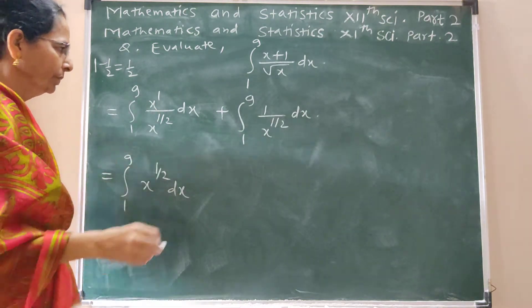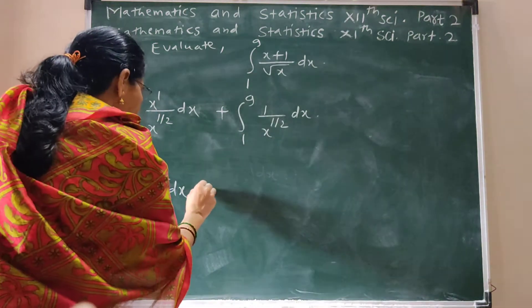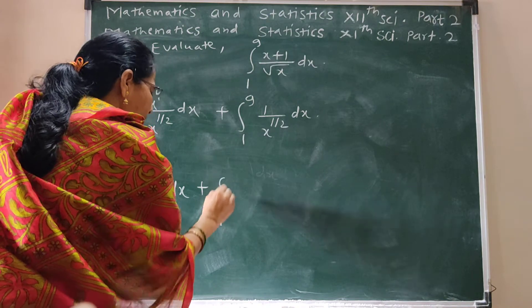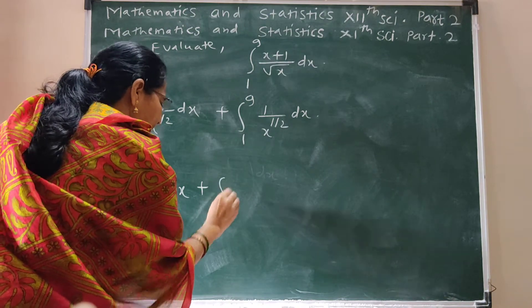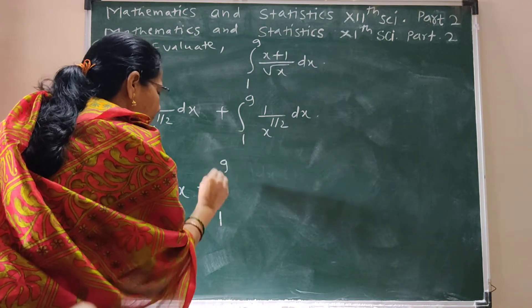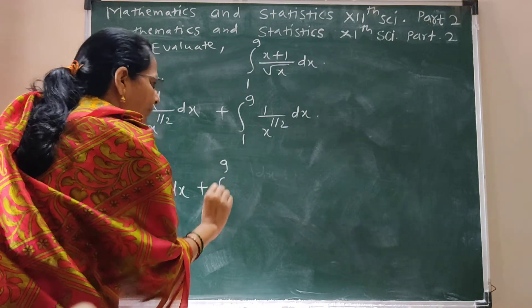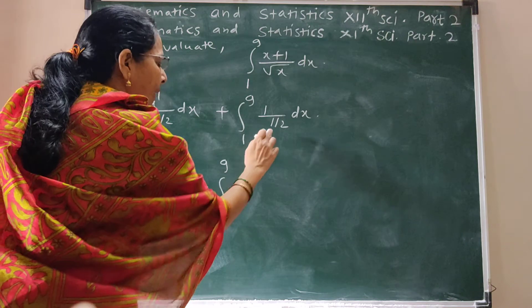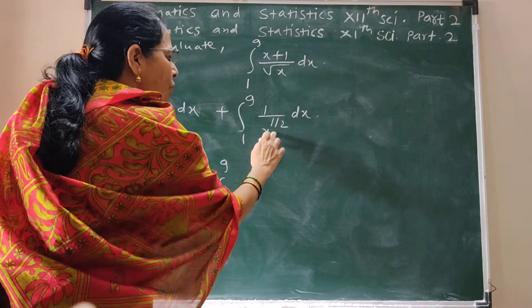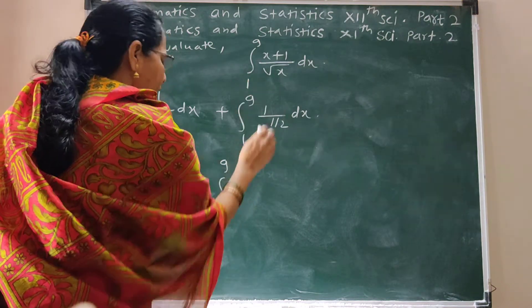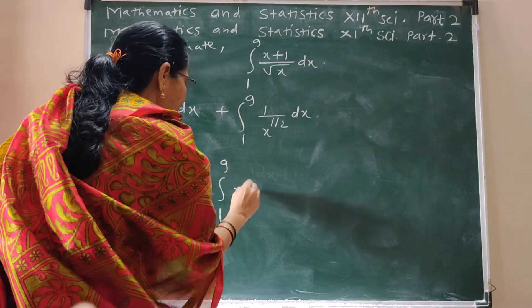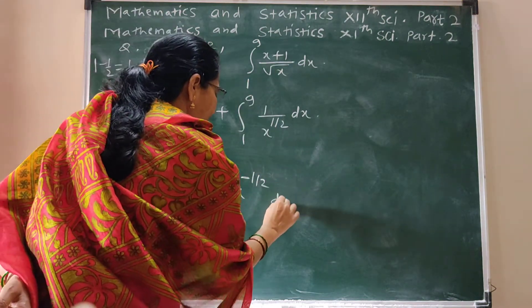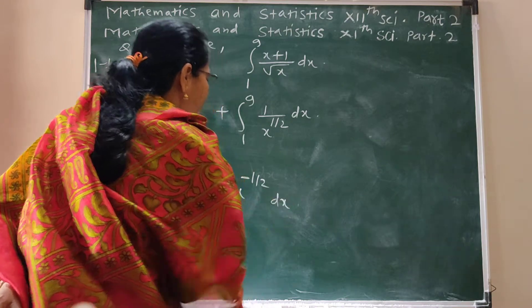This is the first value. Plus integration from 1 to 9 of x raised to half. x raised to half goes to the numerator as x raised to minus half, dx.